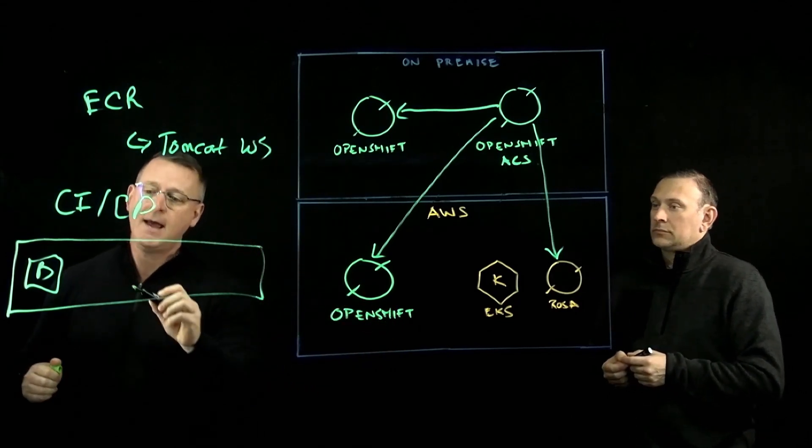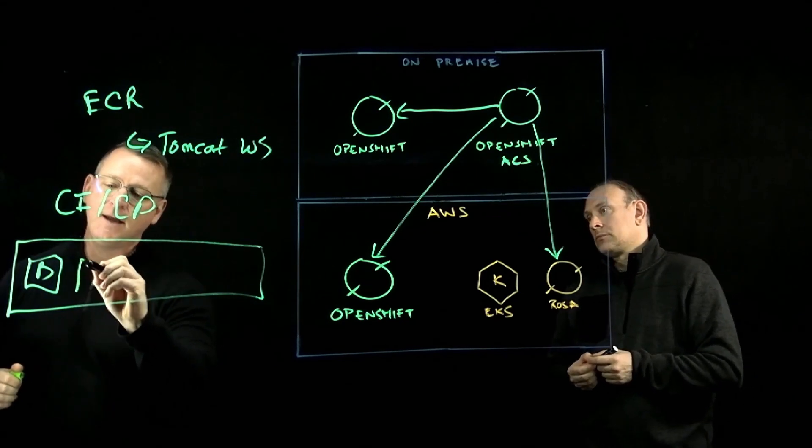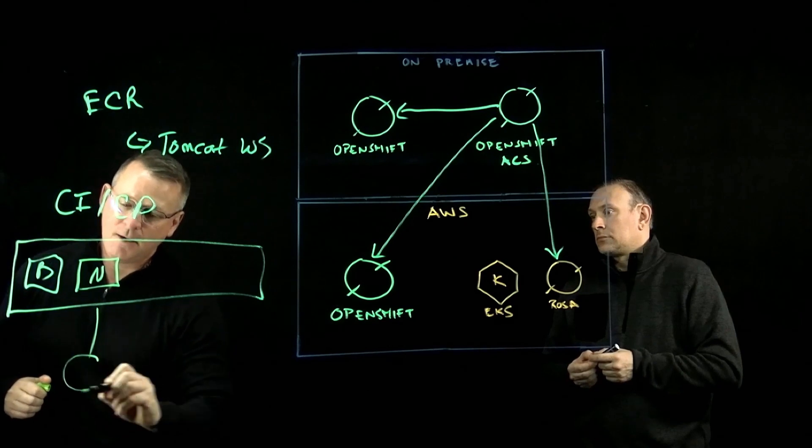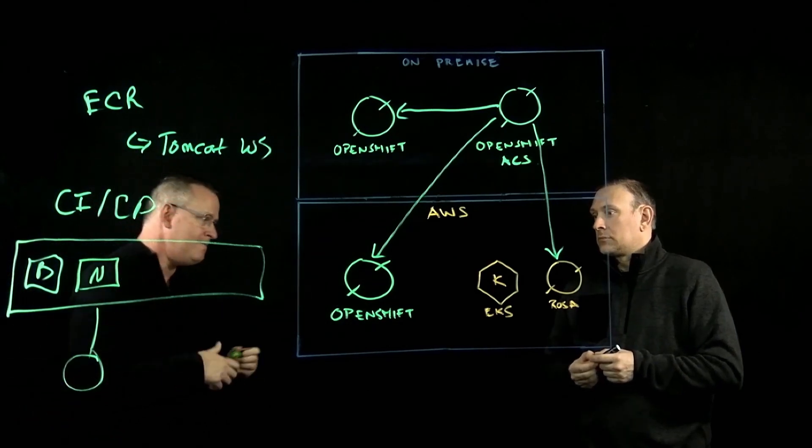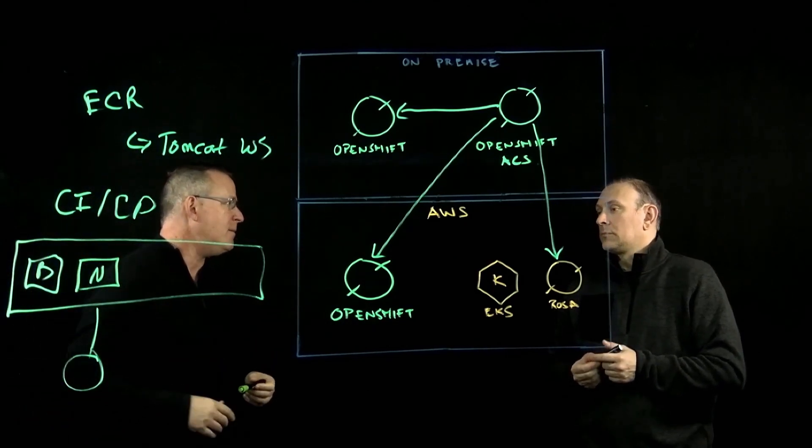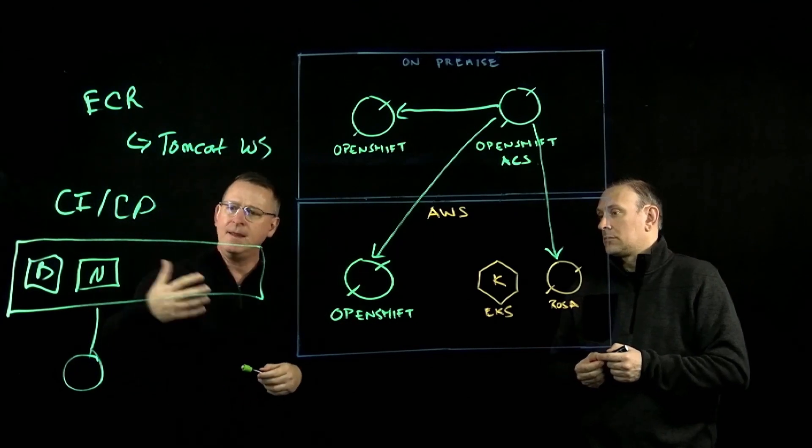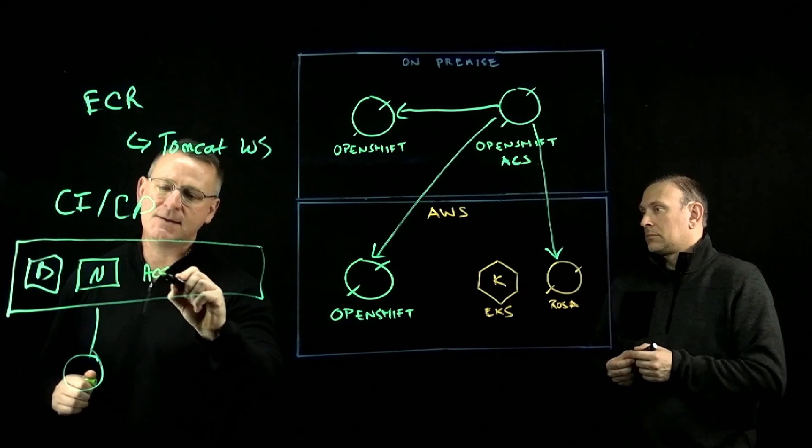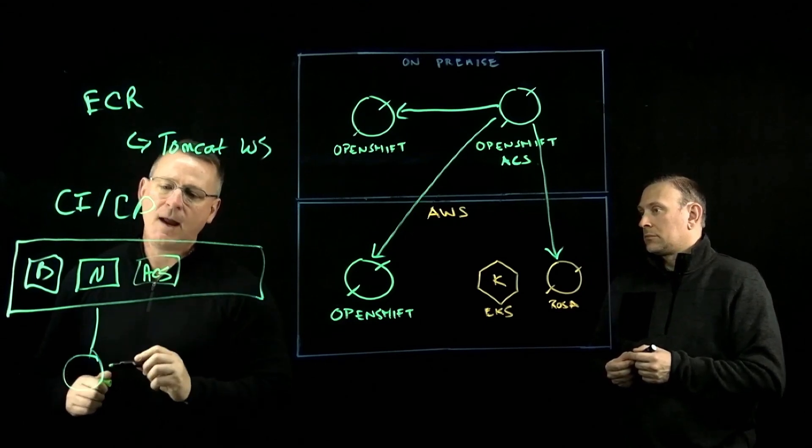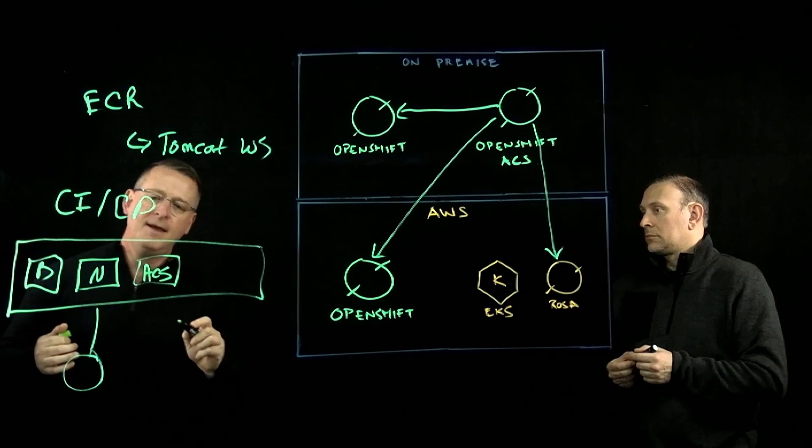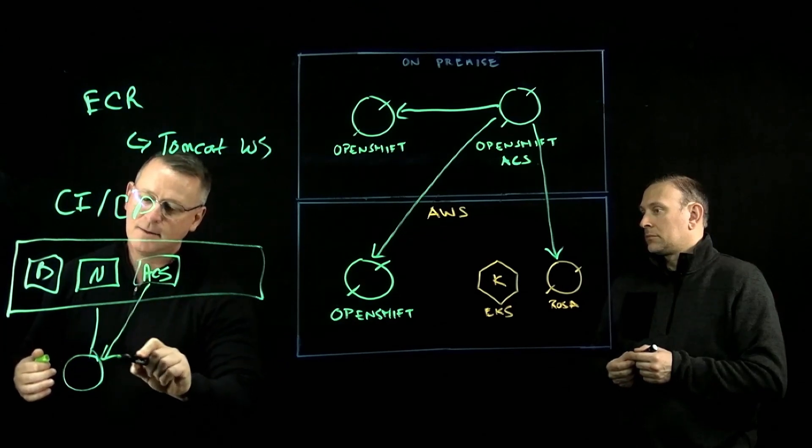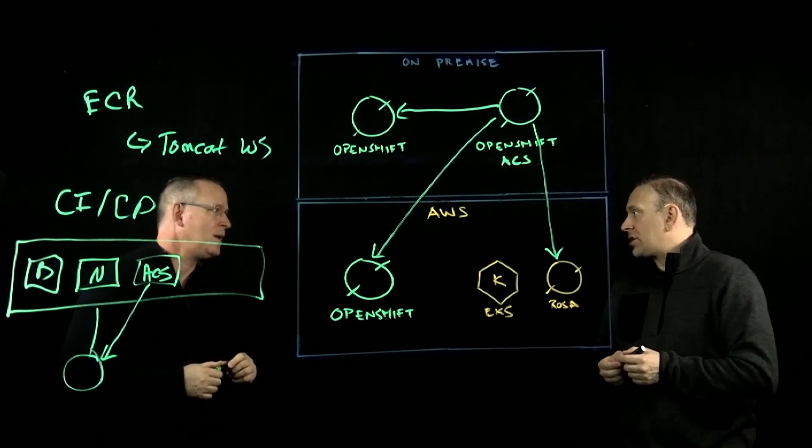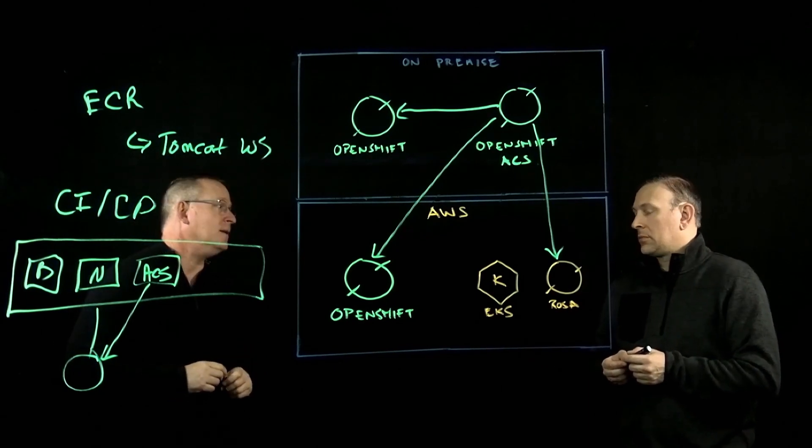For example, maybe that artifact would be stored in something like a Nexus repository. Nexus is where you're going to physically store anything that's created during that build step. And then where ACS could come into play is you can have a step in your CI/CD pipeline that can analyze what was created in that build repository. So essentially doing introspection of the actual. Exactly.